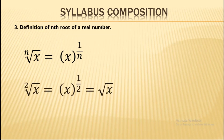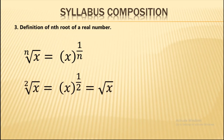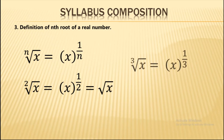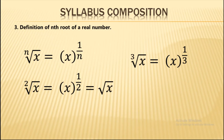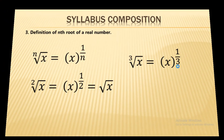We will also study the nth root notation. The square root of x is written with the radical sign, where the index 2 is kept silent. For a cube root, we write index 3 under the radical, meaning x to the power 1/3. We will discuss this further in our next videos.